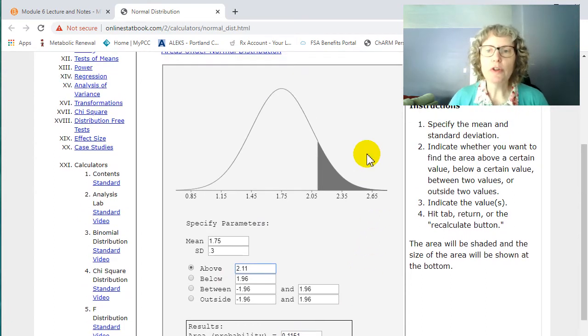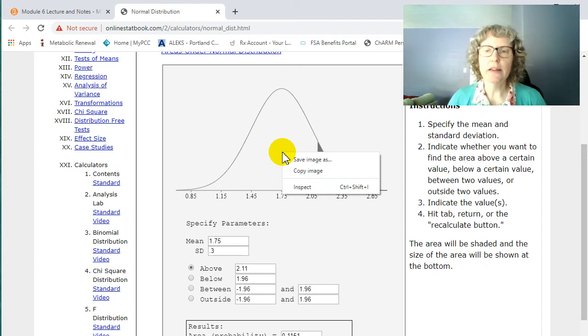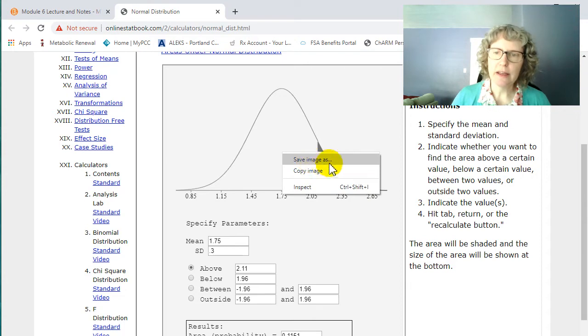So let's say this was a homework question. You could right click on this normal curve, hit copy image, or you could save it as a file if you wanted to, a separate file. I'm just going to hit copy.